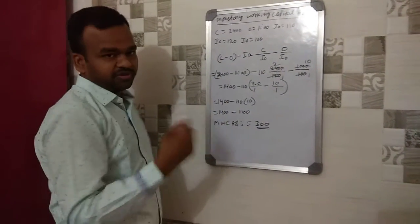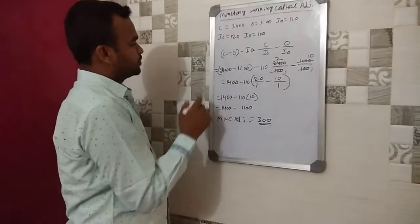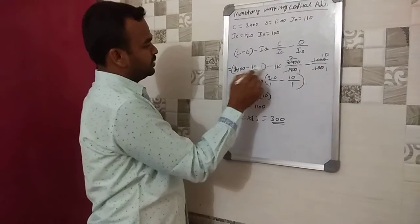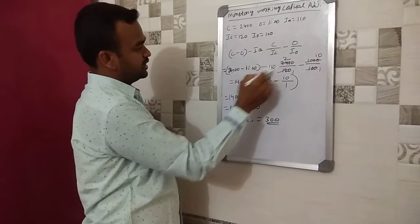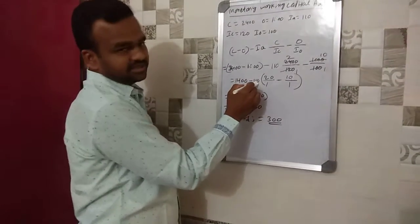Now we shall simplify the values. 2400 minus 1000 equals 1400, minus 110.